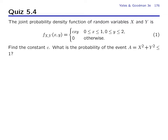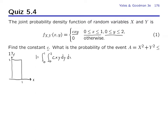Now we have a joint PDF of x and y that is more complicated than a uniform example. The joint PDF equals cxy, where c is an unspecified constant, over the box region where x goes from 0 to 1 and y goes from 0 to 2. The first thing we want to do is find the constant c. The integral of the joint PDF over all x and y must equal 1, so: 1 equals the integral for x from 0 to 1, y from 0 to 2, of cxy dy dx.